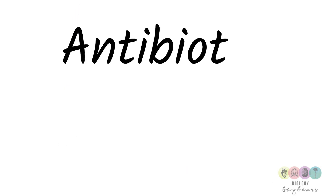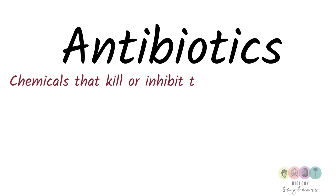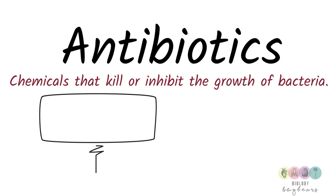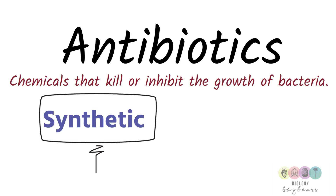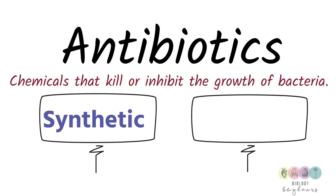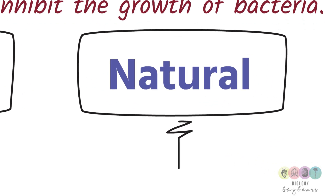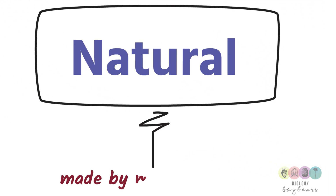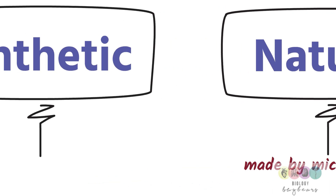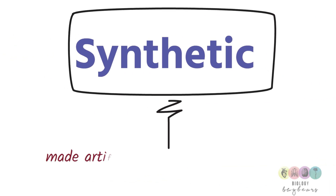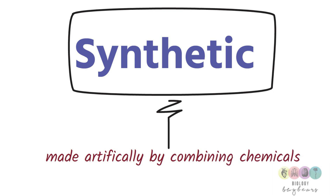The best place to start is by understanding what an antibiotic is. Antibiotics are chemicals that kill or inhibit the growth of bacteria. Some antibiotics are synthetic, and there are also natural antibiotics — by natural, we mean they are made by microorganisms such as bacteria and fungi. If they're synthetic, they're made artificially by combining chemicals.